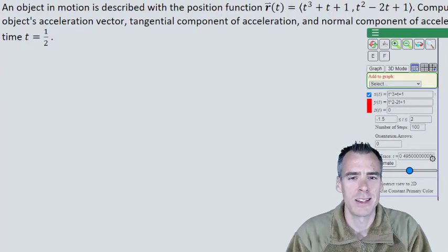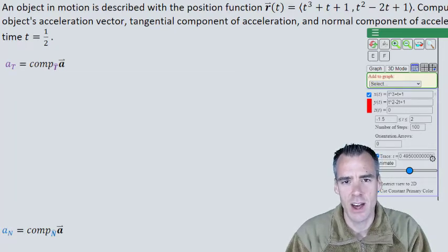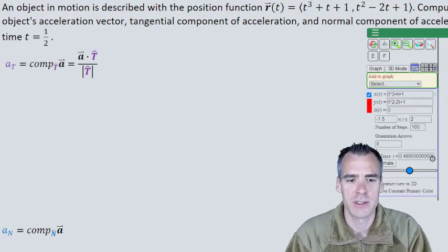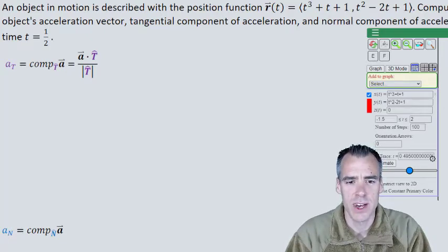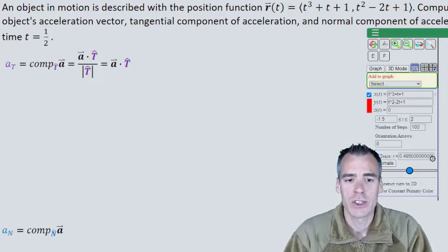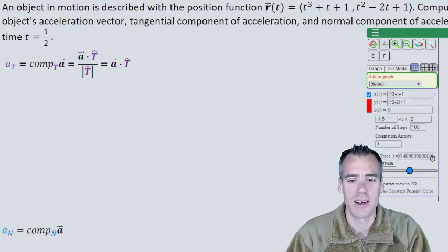Starting where we left off, we have these projection equations for the tangential normal components of acceleration. We can translate these into their dot product versions. The projection of a onto T, we break down to the vector a dotted with the unit tangent vector T all divided by the magnitude of T hat. Of course, the magnitude of T hat is one because it's a unit vector. So we're just left with our acceleration vector dotted with our unit tangent vector T. I'm going to propose that we reduce T down here because it's going to help us with the normal component and it's a bit faster to do it this way.